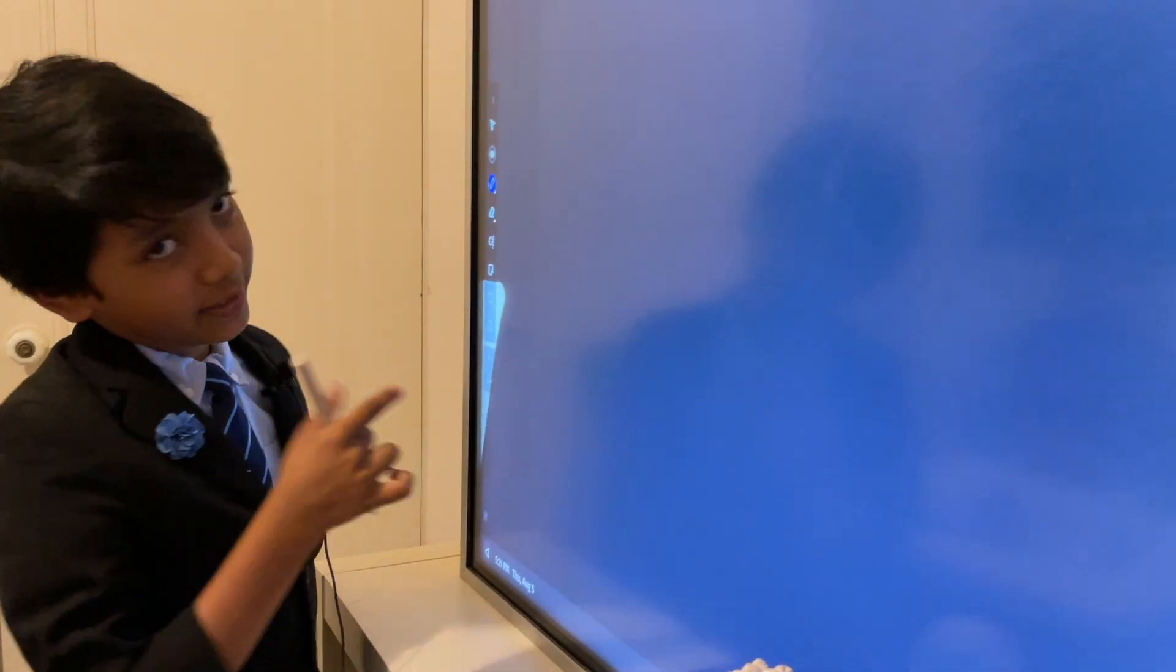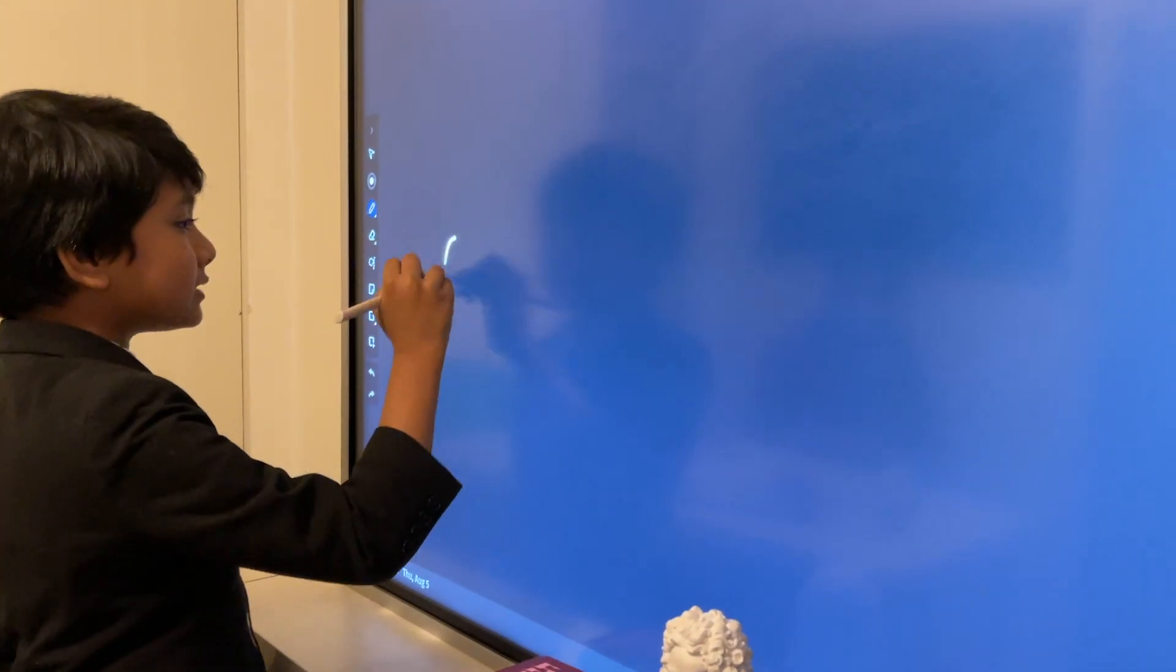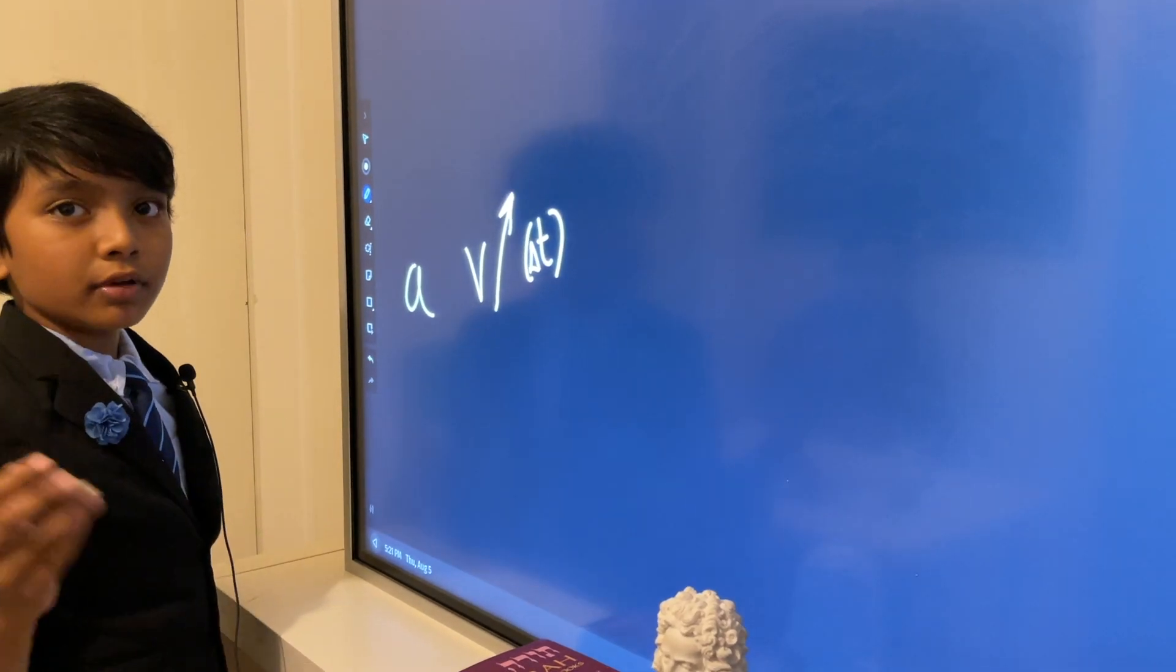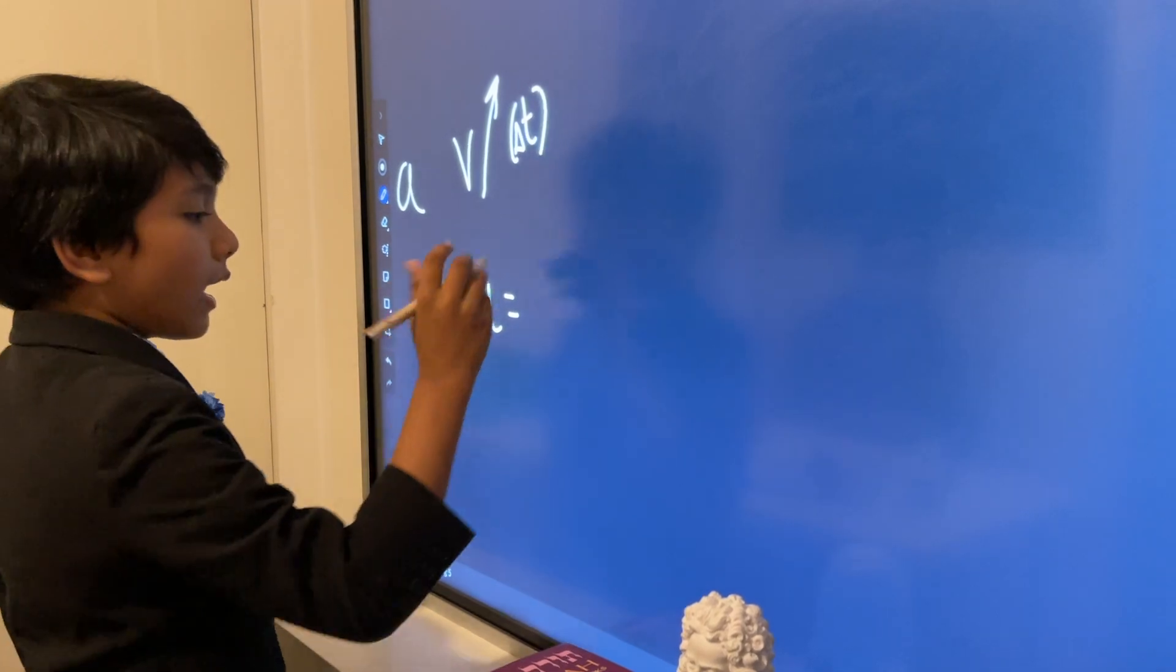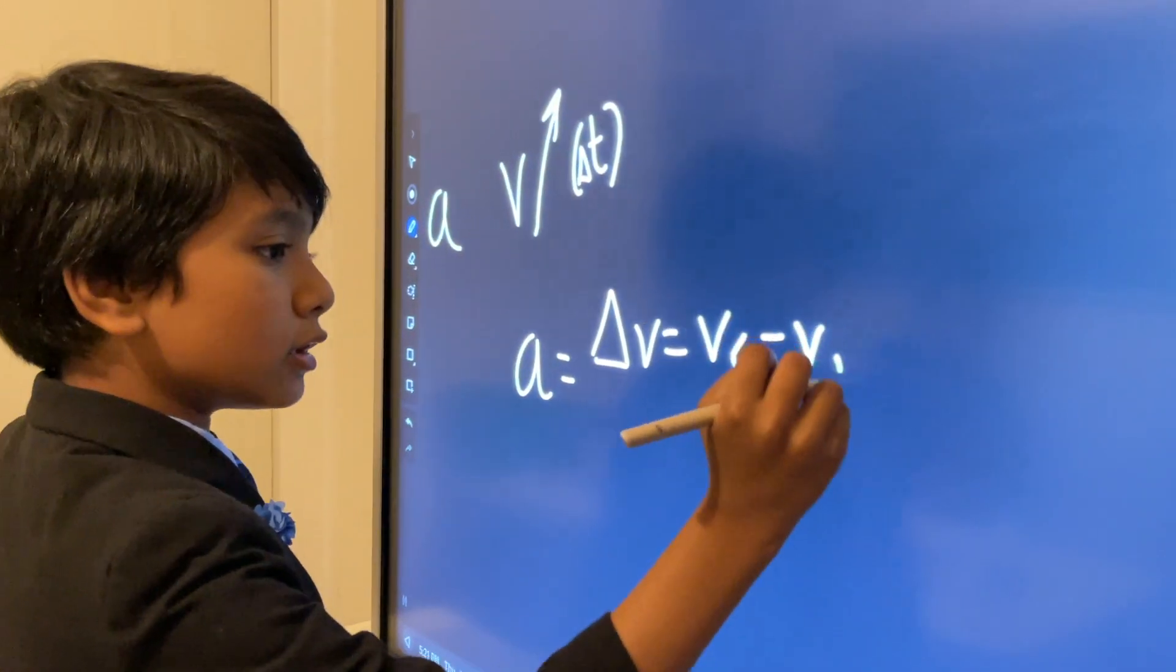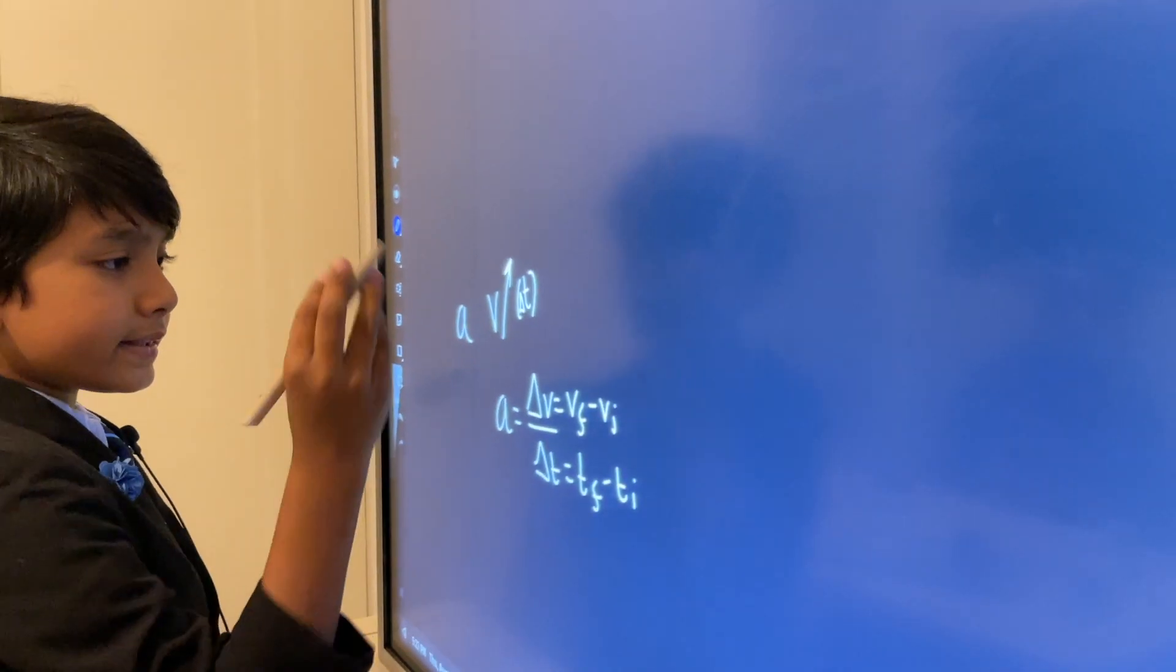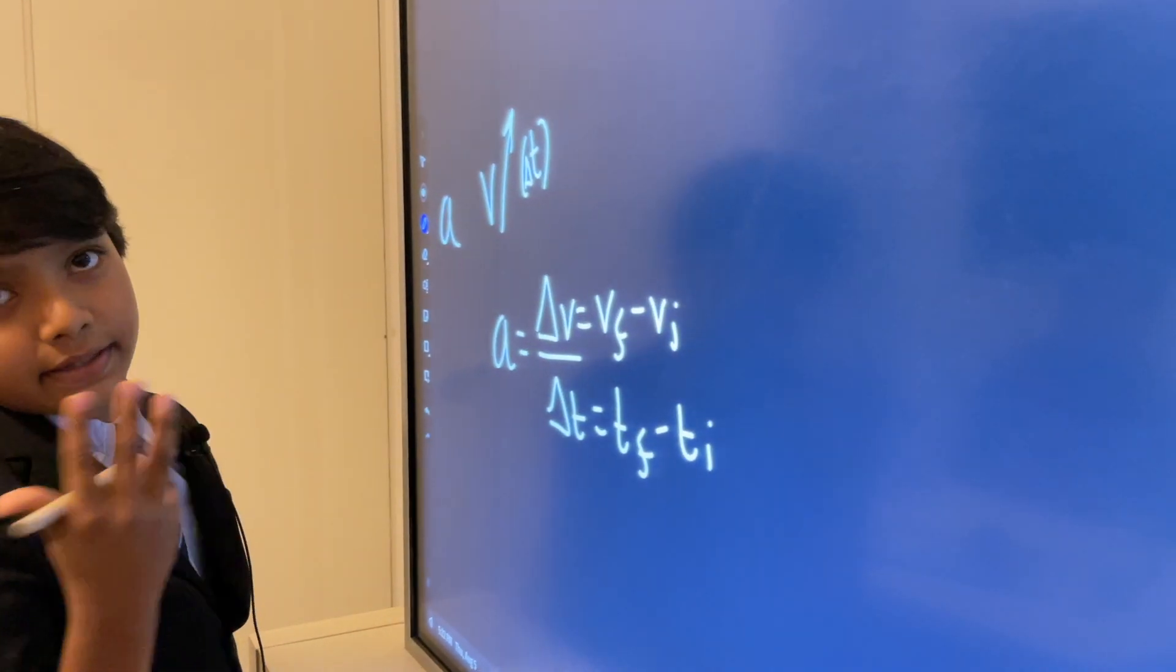Or what really is acceleration? Speed? No, it is not. Acceleration is the measure of how much velocity increases over time. We can measure acceleration using this equation: acceleration is the change in velocity, which is v final minus v initial, divided by the change in time, which is t final minus t initial. So this is what acceleration basically is, the essence of acceleration.